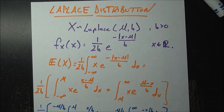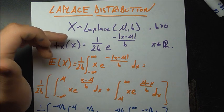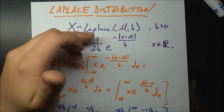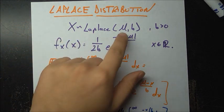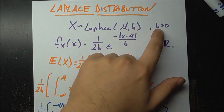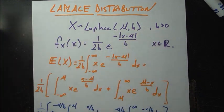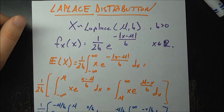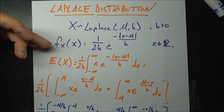In this video, we'll be talking about a continuous probability distribution called the Laplace distribution. We say a random variable x is distributed as Laplace with parameters mu and b, where b must be greater than zero and mu can be any real number, if it has the following PDF.